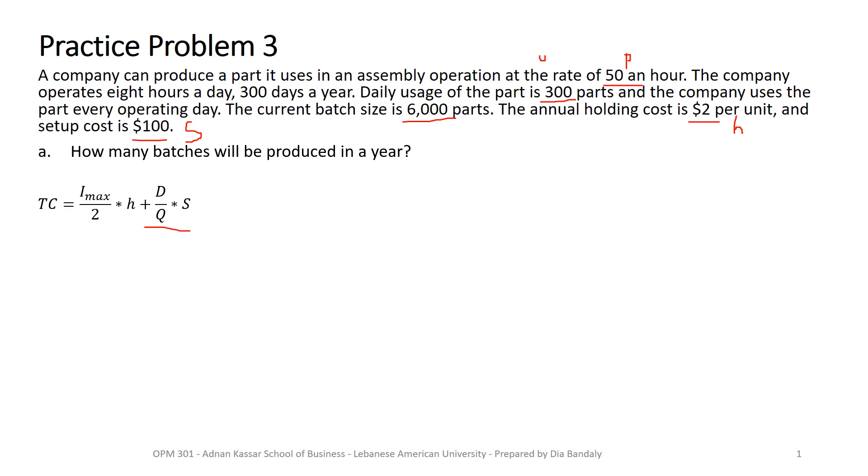We're multiplying a certain number, which is this one, by S, which is the setup cost. Why we're doing that? Because this is our annual setup cost. So we are multiplying S by this value, which is D over Q. Because D over Q represents the number of setups, the number of batches, the number of cycles.